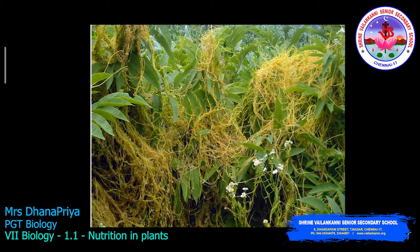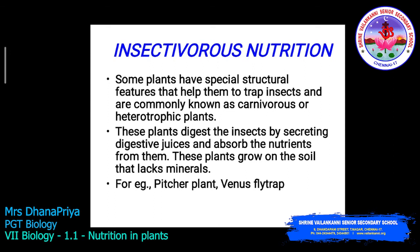Insectivorous nutrition is a mode in which plants feed on insects to get nutrition. Some plants have special structural features that help them trap insects and are commonly known as carnivorous or heterotrophic plants. These plants digest insects by secreting digestive juices and absorb nutrients from them. These plants grow in soil that lacks minerals, so they trap insects and digest them to get nitrogen. Examples are the pitcher plant and Venus flytrap.